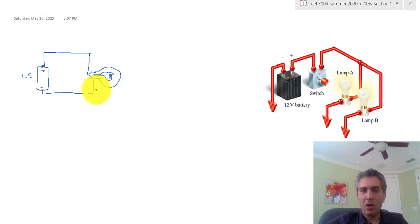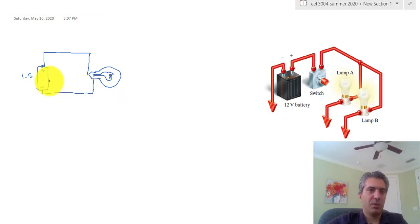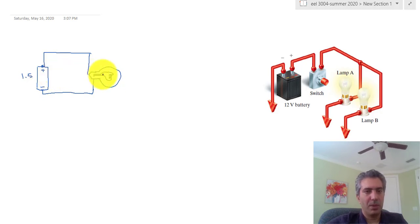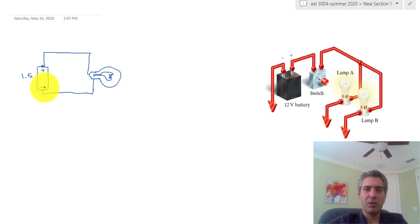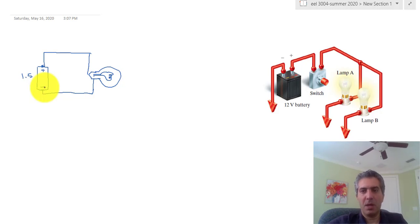In a car, the battery is under the hood. If you have a light bulb somewhere else and you want to connect the positive terminal all the way to the light bulb and then run the return wire all the way back to the second terminal, you're going to need two wires. However, in many automobiles the frame of the car is made of metal, which is a good conductor, and it's a large chunk of metal so its resistance is small.